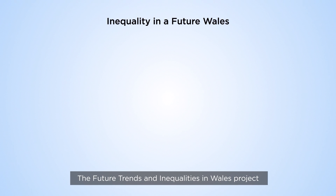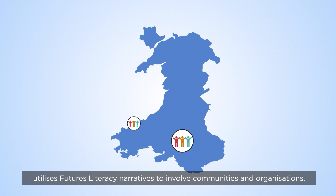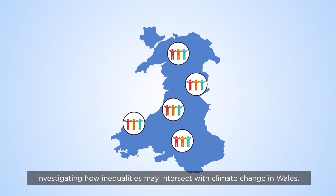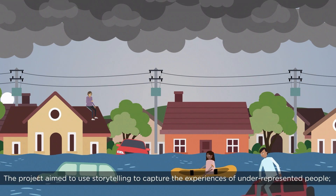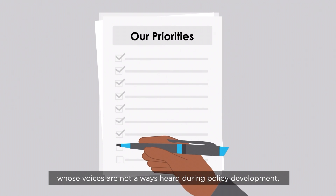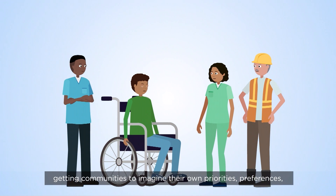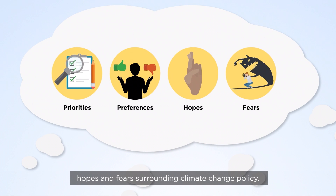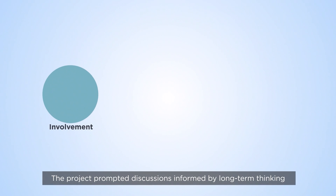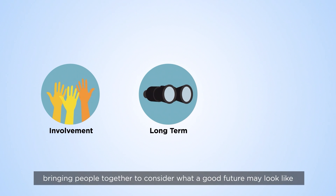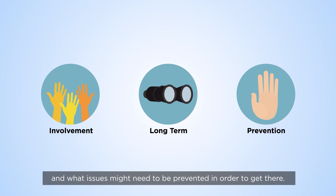The Future Trends and Inequalities in Wales project utilises futures literacy to involve communities and organisations investigating how inequalities may intersect with climate change in Wales. The project aimed to use storytelling to capture the experiences of underrepresented people whose voices are not always heard during policy development, getting communities to imagine their own priorities, preferences, hopes and fears surrounding climate change policy. The project prompted discussions informed by long-term thinking about climate and inequalities, bringing people together to consider what a good future may look like and what issues might need to be prevented in order to get there.